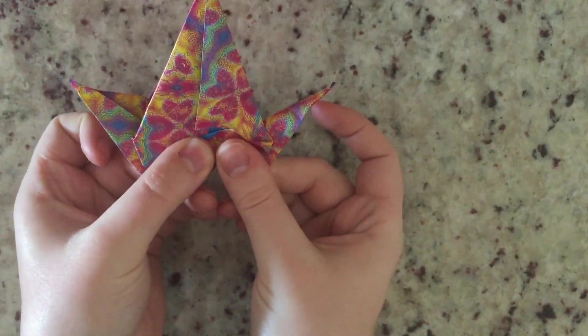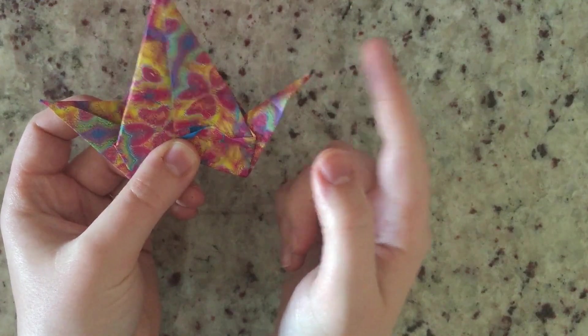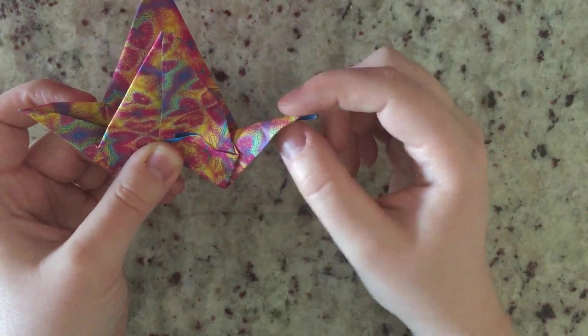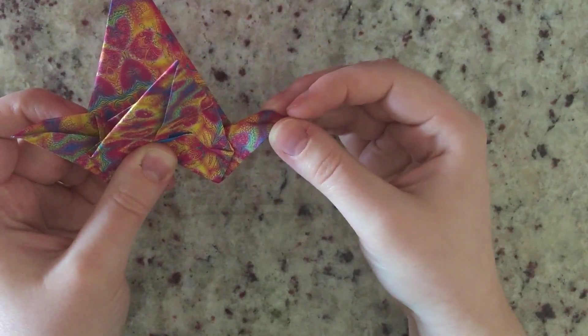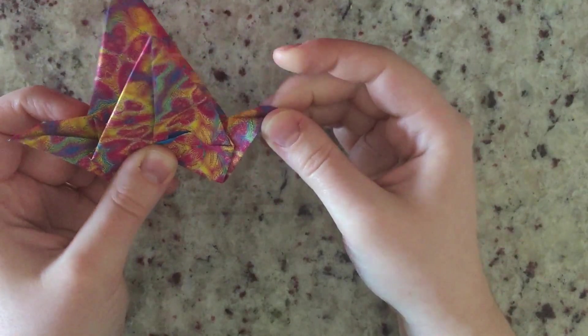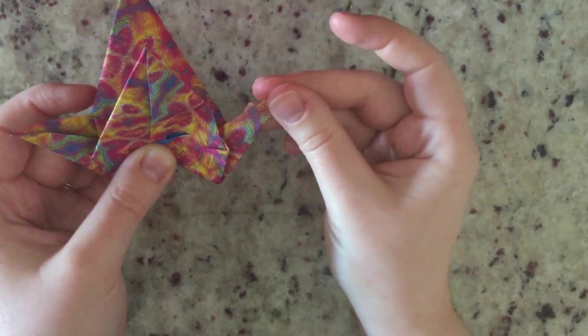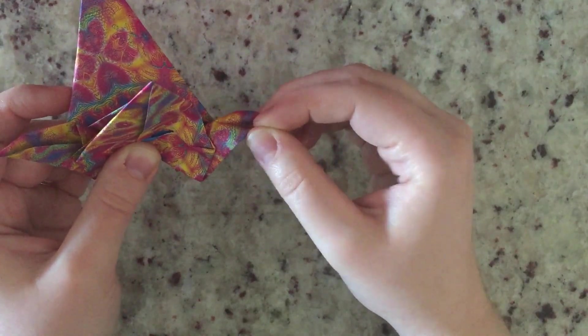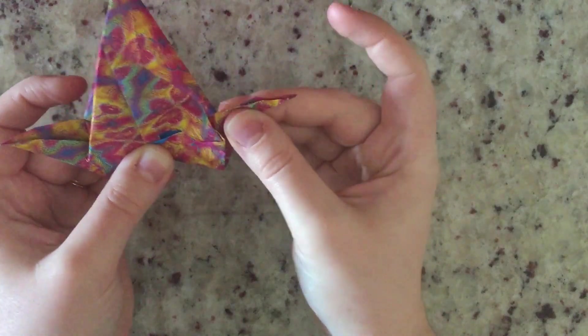So now you can just decide which end you'd like to be the head. So I think this end is going to be my head. I'm going to take my thumb and I'm going to push up at the same time as I push down so that this fold turns inside out. You see what I did there? The fold was like this. And now I'm going to stick my finger, pull up the other two fingers to make a head.